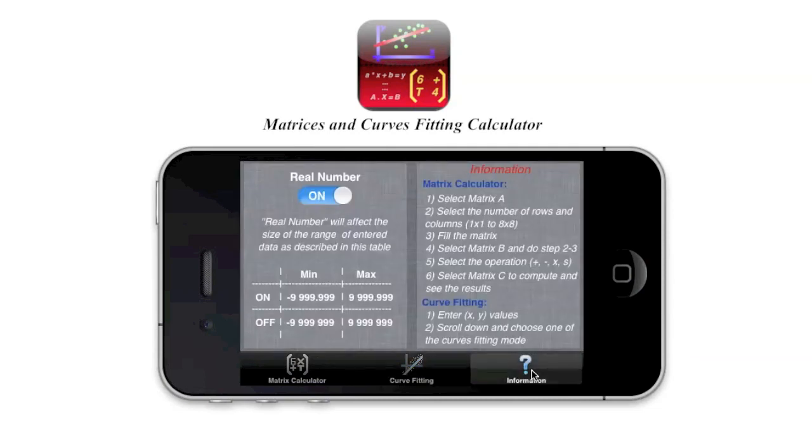So in the information part, in the right part of this tab you will find some instructions on how to use the application in case you are missing something. In the left part you can choose whether to use real numbers or not. So with the real number it will affect the size of the range of entered data as described in this table.